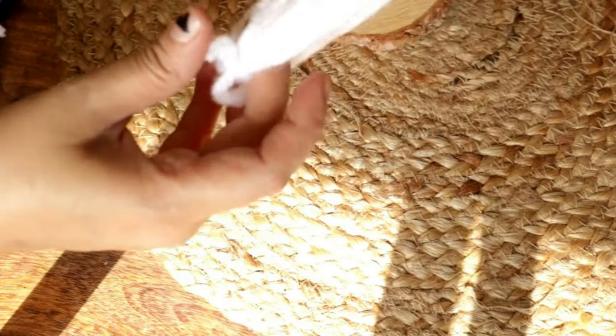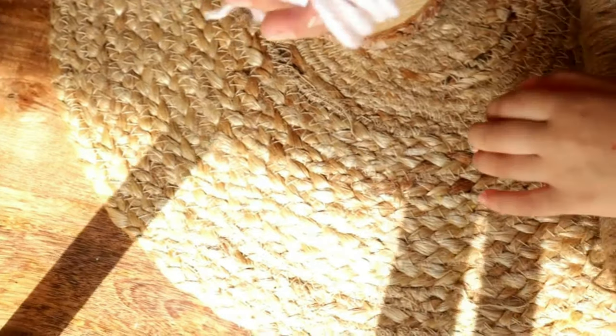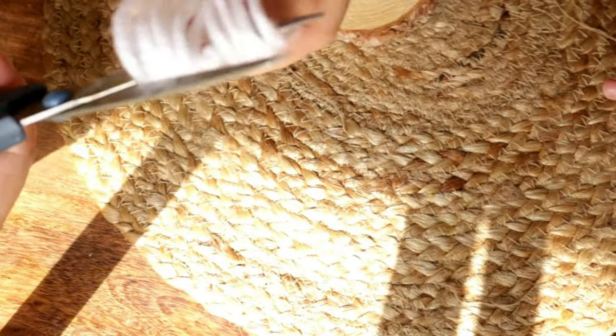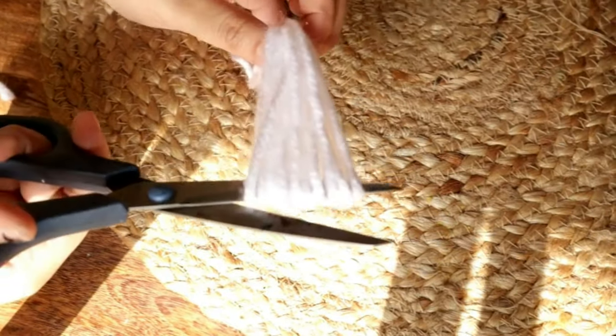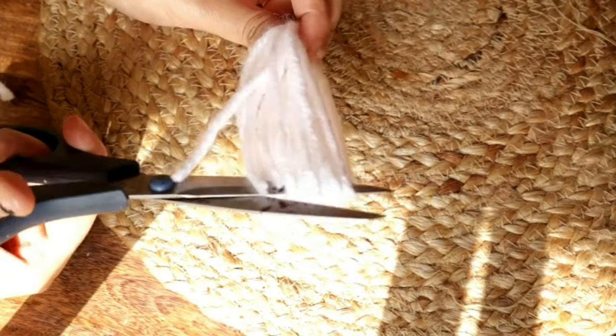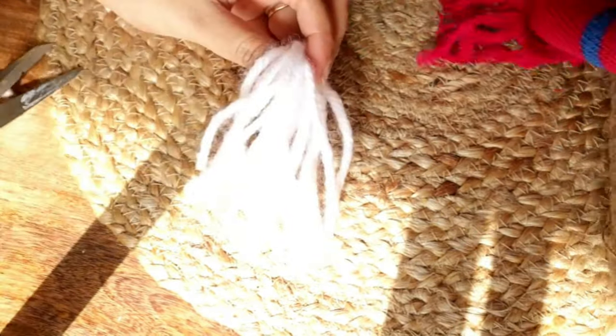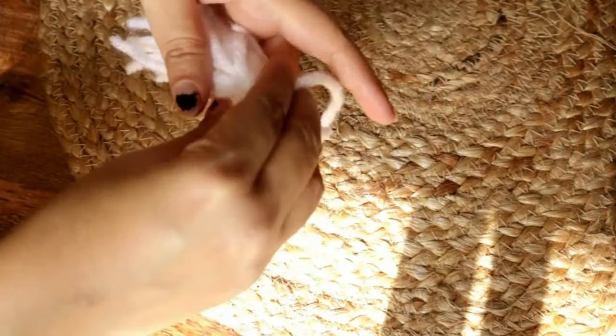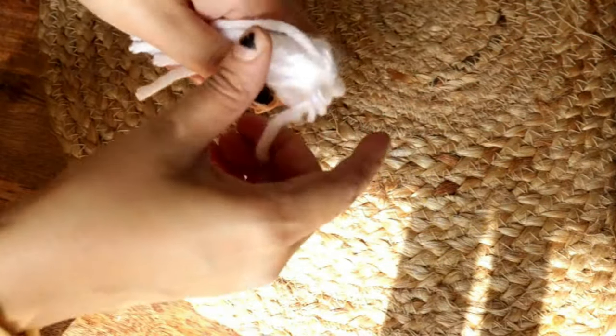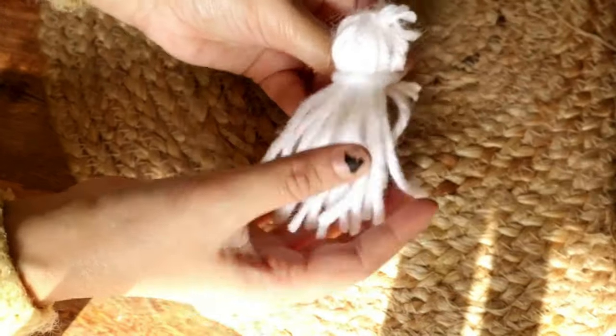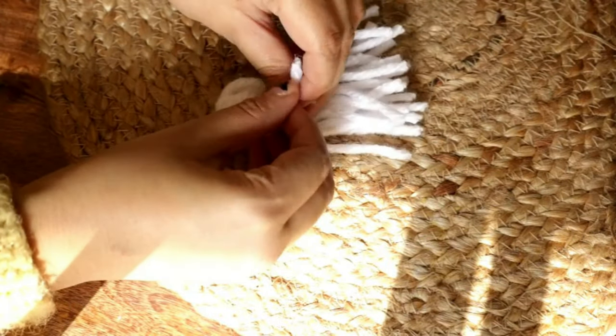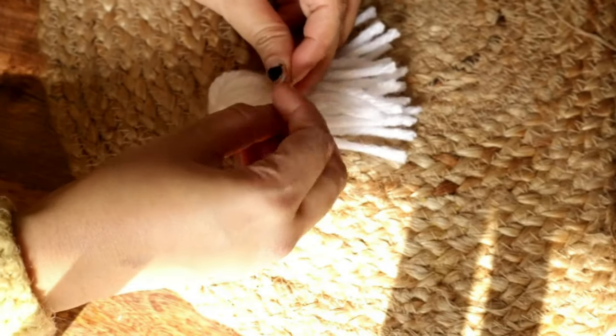Once you are done wrapping, then you have to simply tie the open ends so that you can easily take out this tassel from the coaster. Then cut it from the bottom and it will start looking like a tassel. Next, you have to take a small piece of the wool and tie the upper section so that it looks like a proper tassel. Then you have to simply trim the end so that it looks cleaner. And just like that, our tassel is ready.